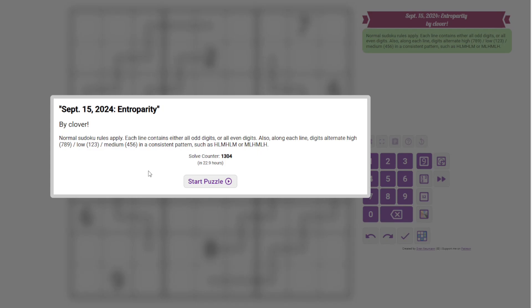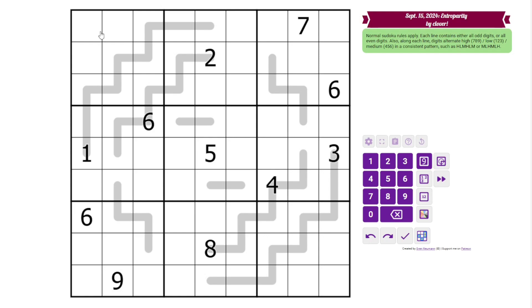This is a combination of two types of lines. We have normal Sudoku rules, 1 to 9 in each row, column, and 3 by 3 box. Additionally, we have gray lines in the grid, and these gray lines all have two properties. The first property is that each line contains either all odd digits or all even digits. For example, this line already contains a 4 and an 8, so we know that all the digits on the line are even.